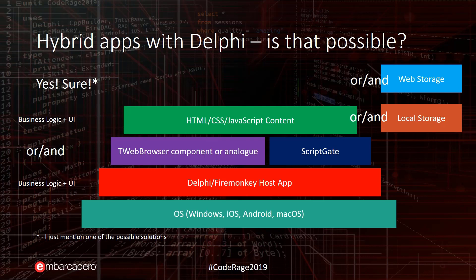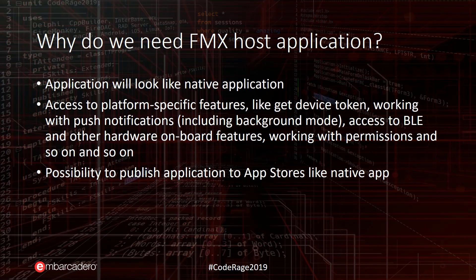Our Delphi FireMonkey application will have business logic written in Object Pascal code. For the UI, we will have, for example, a TWebBrowser component or any analog, which will host HTML, CSS, and JavaScript content inside itself. For communication between the host application and the HTML/CSS code, we will use a solution called ScriptGate — an open-source solution you can download and install. I will show how to do that later.